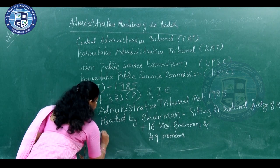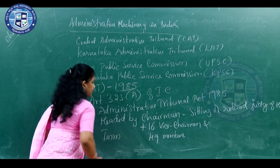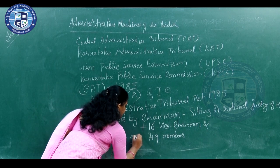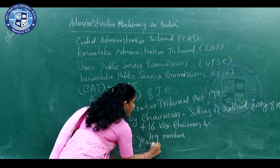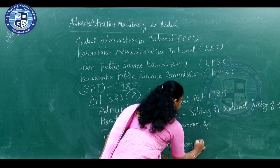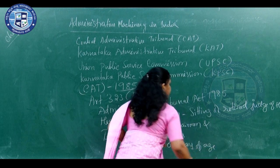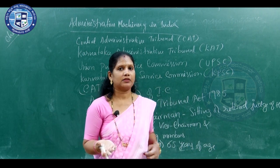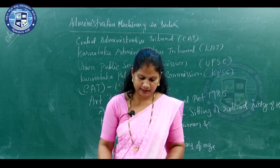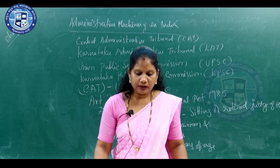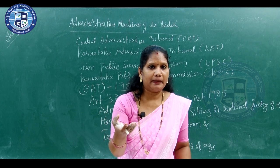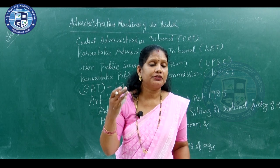The term of officers of the Central Administrative Tribunal is 5 years or 65 years of age, that is the retirement age, whichever comes earlier. Next, I will focus on the topic of Karnataka Administrative Tribunal.